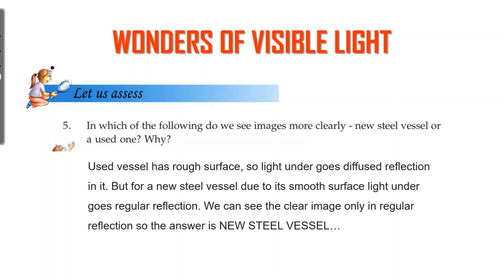Last question: in which of the following do we see an image more clearly — a new steel vessel or a used one? A used vessel has a rough surface, so light undergoes diffused reflection — irregular reflection — and we cannot form a clear image. For a new steel vessel, due to its smooth surface, light undergoes regular reflection, so we can see a clear image. The answer is the new steel vessel.